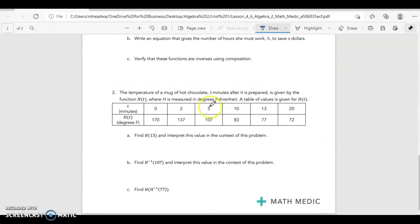So taking that into consideration, number 2 on this back page, we're just given a function H of T where H is our temperature and T is the time passed. So in our initial function H of T, our input is time. The input is time and our output is the temperature.